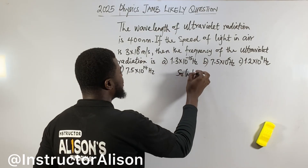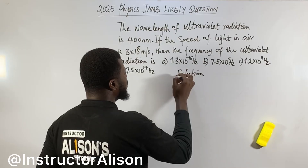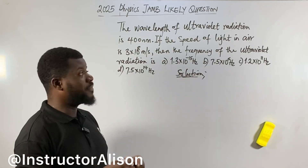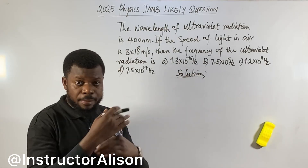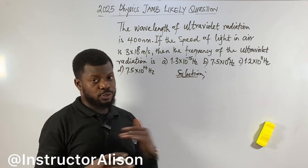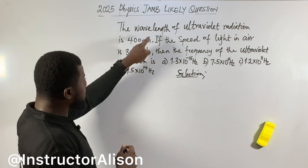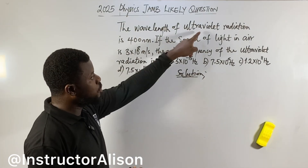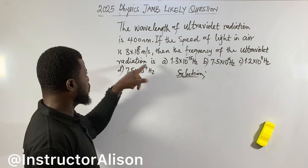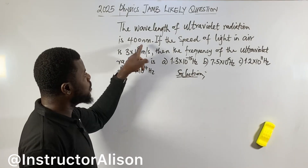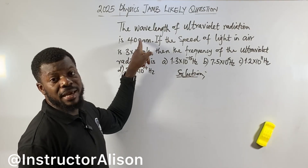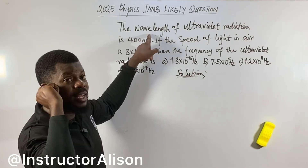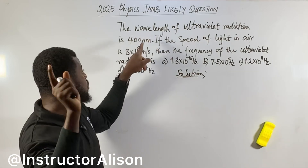I told you that for my teaching I don't want to waste time, same way I don't want to waste time for chemistry and also for mathematics. If I see a question, I bring a parameter and I solve. Now they say the wavelength of ultraviolet radiation is 400 — my interest deals firstly with what they call wavelength.